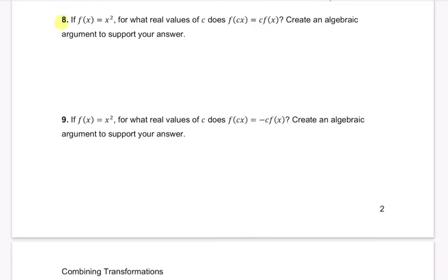if f of x equals x squared, for what real values of c? So we're looking at other functions and generalizing when the horizontal and the vertical dilations are equal. So f of cx are horizontal. When does it equal our vertical? Well, again, in this case, f of x is x squared, so this is c times x squared on the right. And on the left, it's going to be c squared x squared, because we're squaring our input.